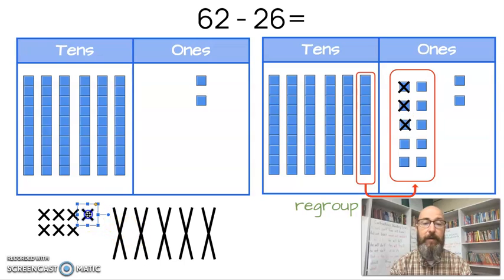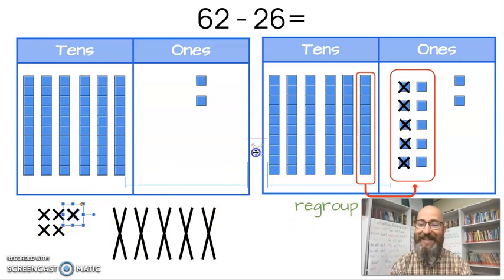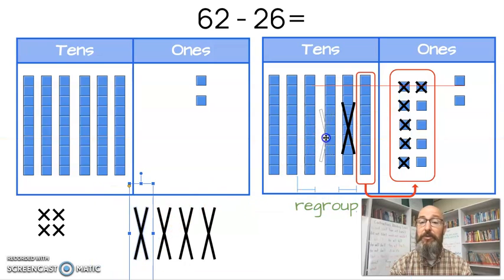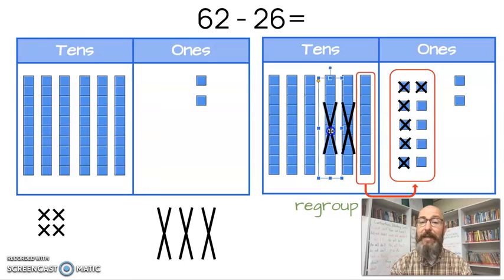Count, four, five, six. So I took away six. That's my six ones right there. Now I'm going to take away two tens. So I'm going to take away two tens. One. Took that one away. Two. I took that one away.